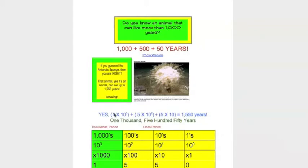Yes, 1 times 10 to the third plus 5 times 10 to the second plus 5 times 10, which equals 1,550 years. That's more than 15 times an average person's life.